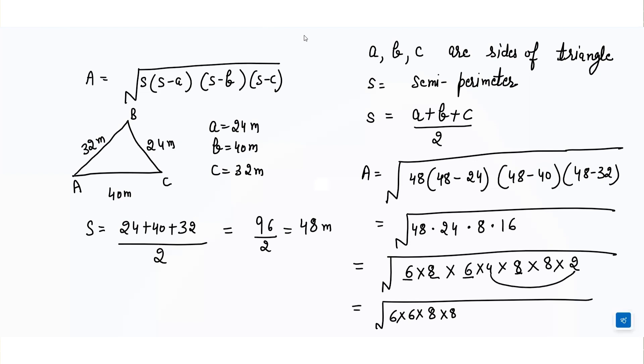Now 4 into 2 is 8, I'll write this 8 here and another 8 over here. Finally, what I get is 6 into 8 into 8, and when I solve it, I get 384 meter square.